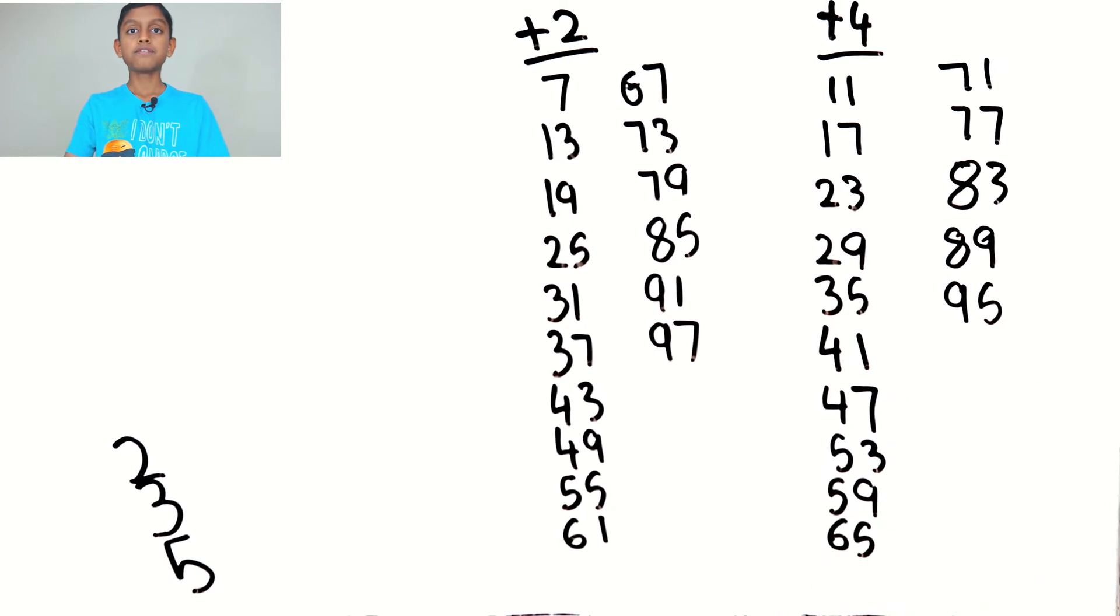We can't add 4 because it's going over 100, so we get 101 which is over 100.